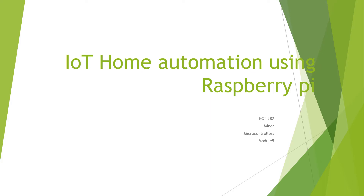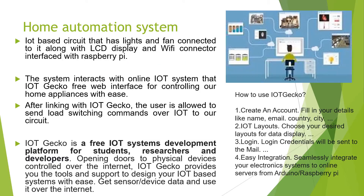Hi all, welcome to another video on Raspberry Pi — that is IoT home automation system. This is the fifth module topic of microcontrollers of KTU home automation system, that is an IoT-based circuit that has lights, fans, and all home appliances that can be connected to the Raspberry Pi board.